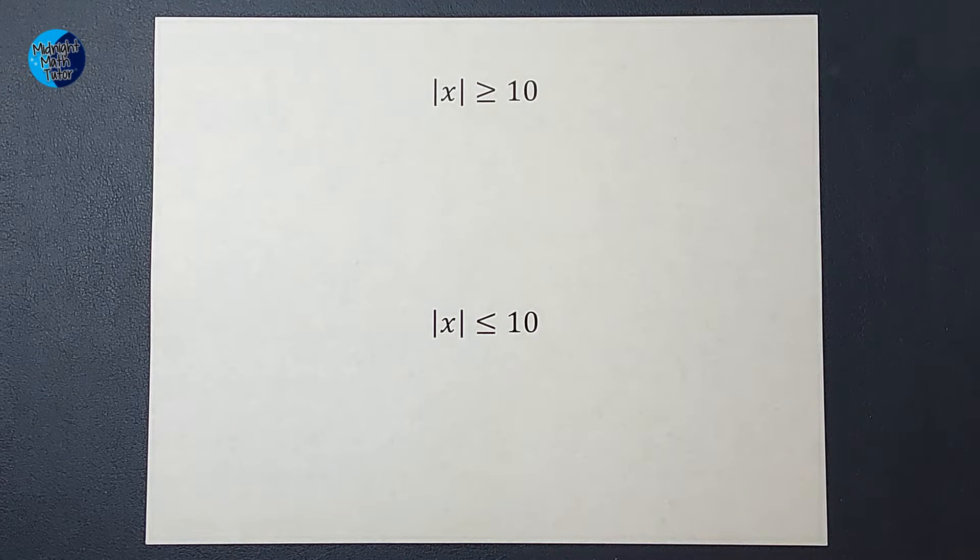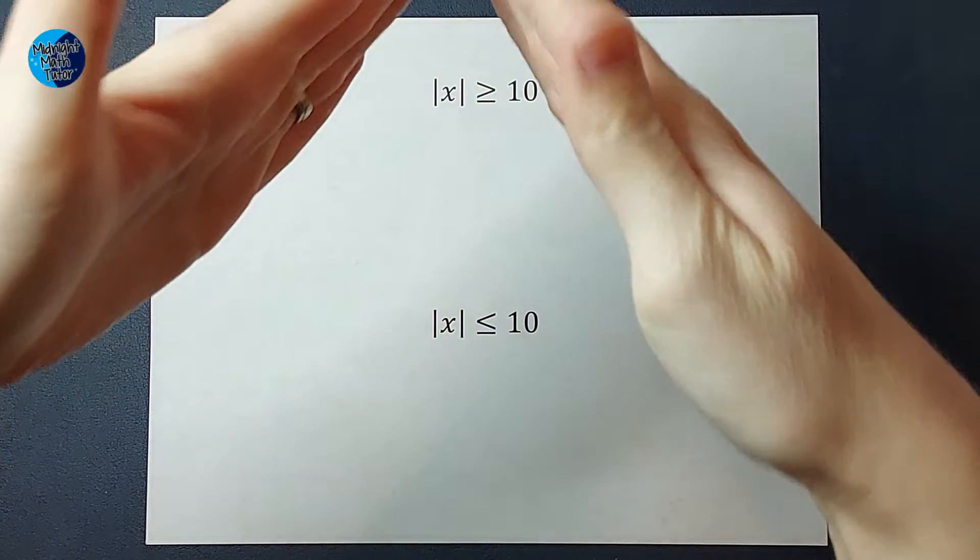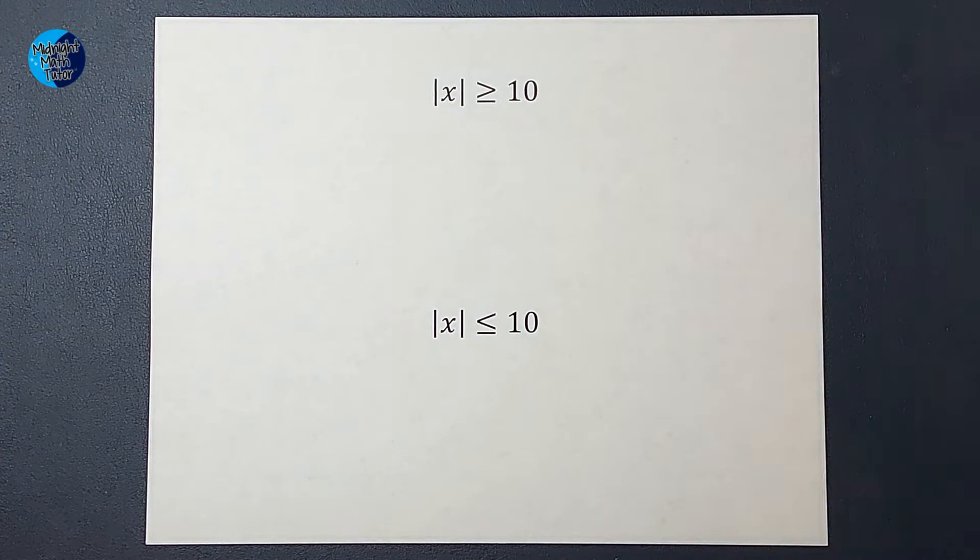Hey guys, we are looking at some absolute value inequalities, and the purpose of this video today is to show you why when we solve these, we split off into two inequalities. You've probably been doing it, maybe you're like, I know how to do it, I get the right answer, but I just don't get why we do that.